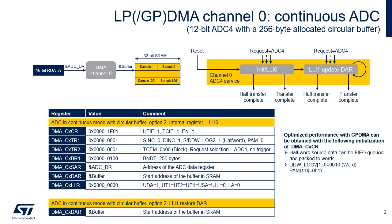Let us describe the initializations that apply to both GPDMA and LPDMA. In the CX CR register, interrupts are enabled and the channel is activated. In the CX TR1 register, the addressing modes are selected: fixed for the source address and incremented for the destination address. The source data and destination data widths are also selected, 16-bit half-word in both cases.